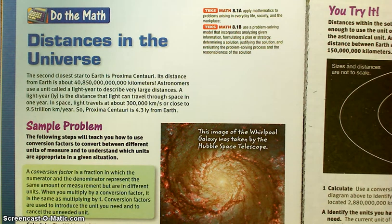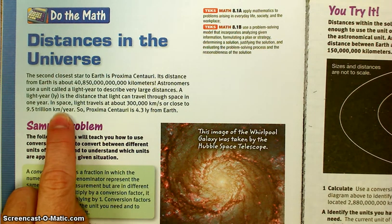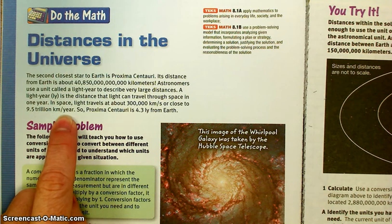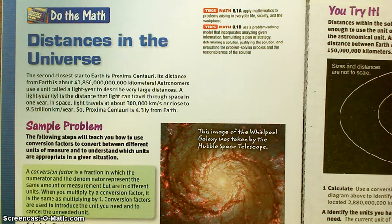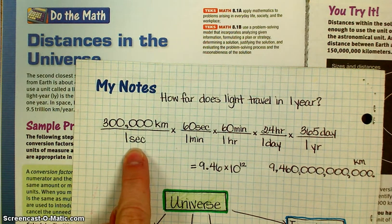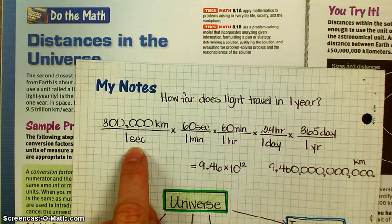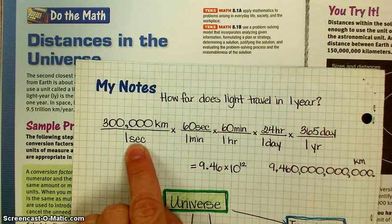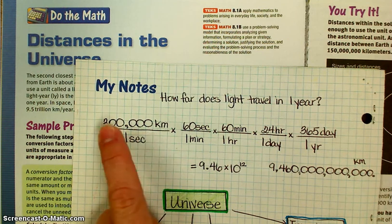A light year is the distance that light can travel through space in one year. In space, light travels at a speed of 300,000 kilometers per second. Light or any other electromagnetic wave, gamma rays, radio waves, x-rays, visible light, all of that stuff travels a distance of 300,000 kilometers every second.